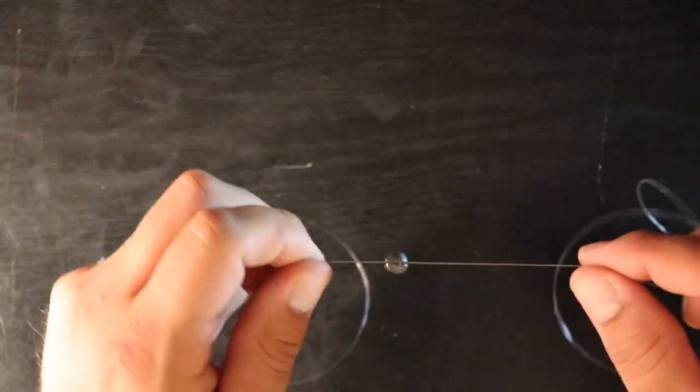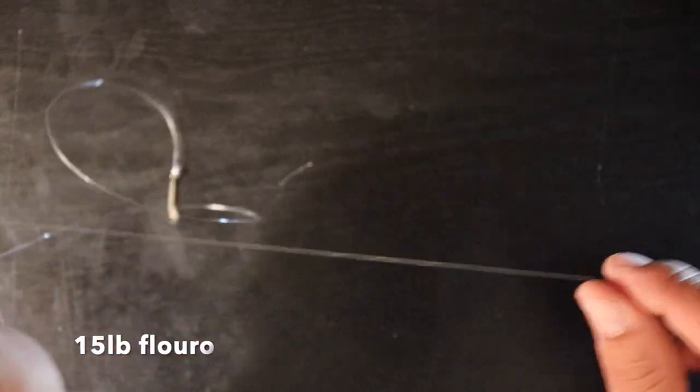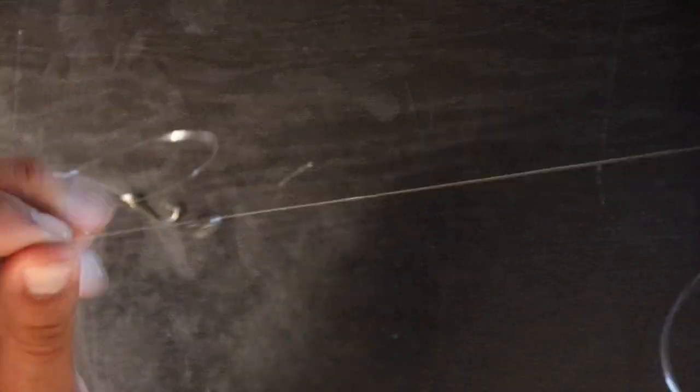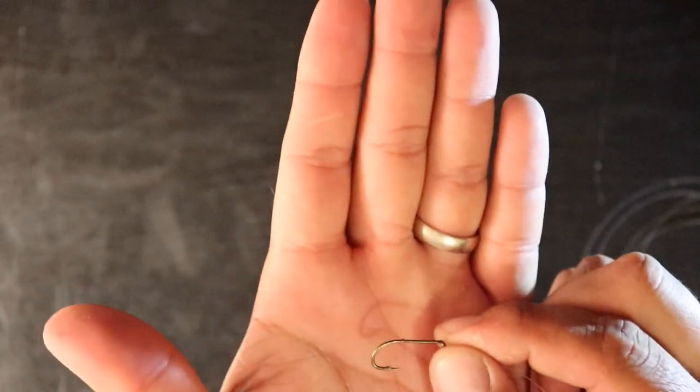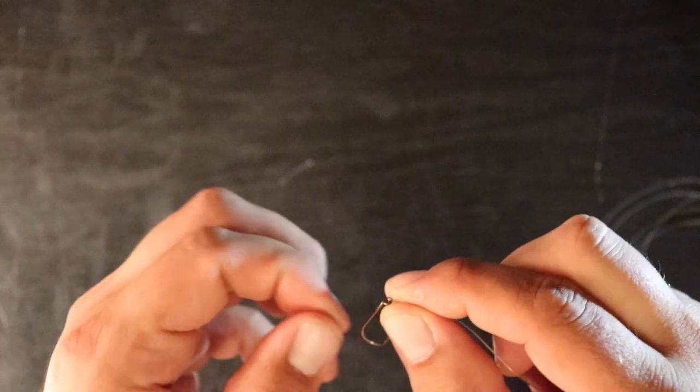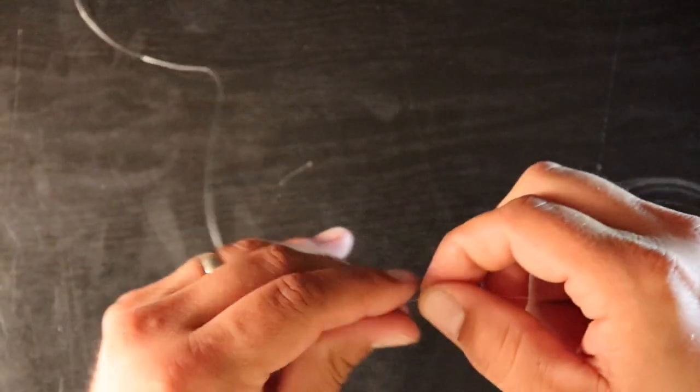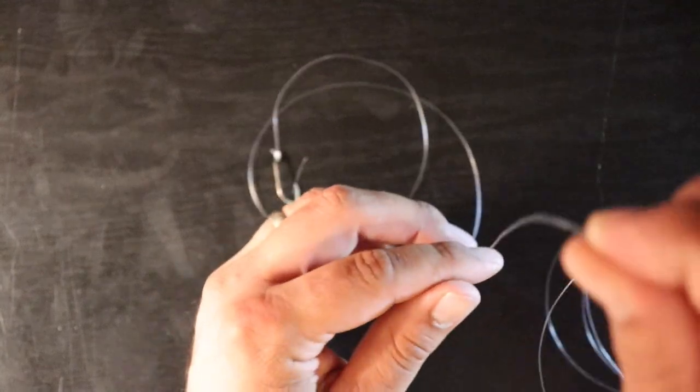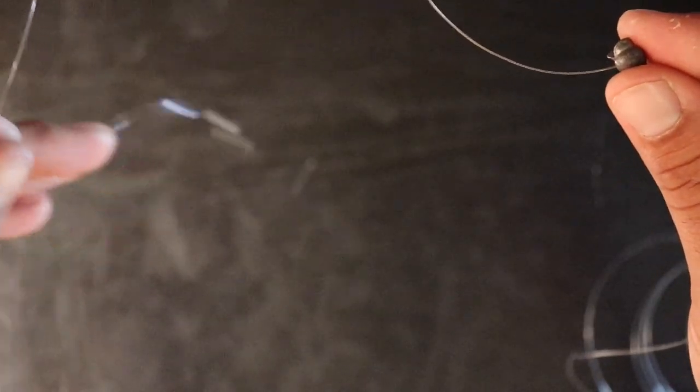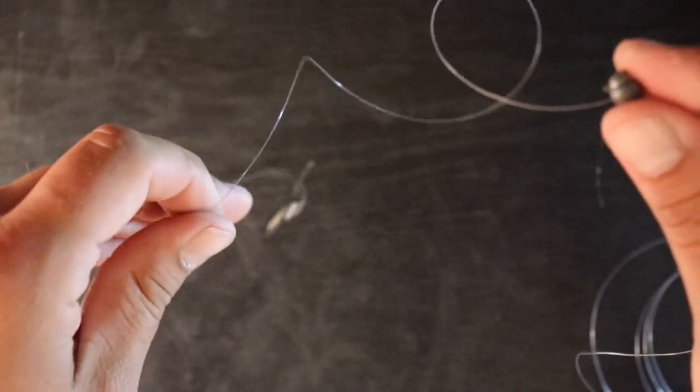So this is the first rig. Again, I got 20 pound braid onto a 15 pound fluorocarbon leader. Again, I got anywhere from three to six feet worth of this leader. And then that goes down to one split shot weight, roughly 24 inches between my weight and my hook. And then I got that down to a size six J hook there. And this rig has caught a lot of sheepshead. See a lot of guys using this. The only thing I'm not really crazy about with this rig is because when you're fishing this one, your line is going to be tight right at this weight.